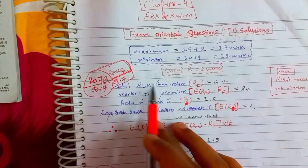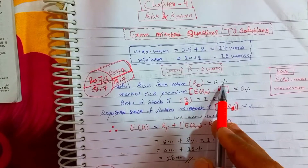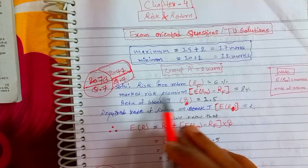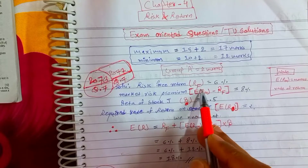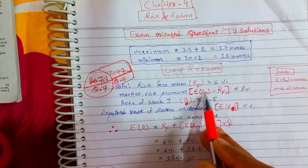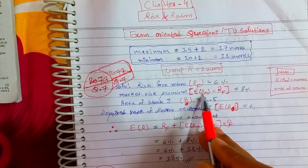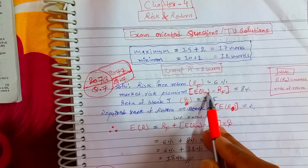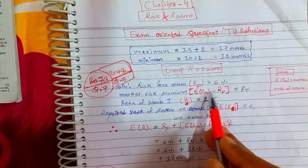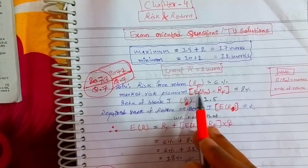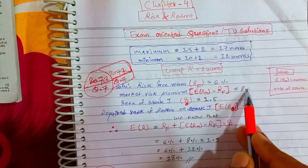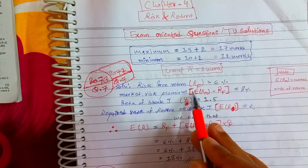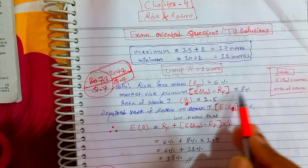The risk-free return is 6%. Market risk premium equals market rate of return (eRm) minus risk-free return. The market risk premium is already denoted as 8%.